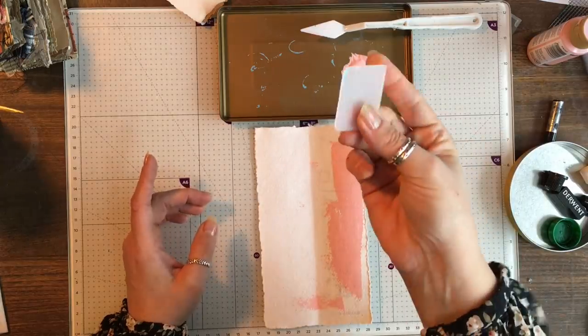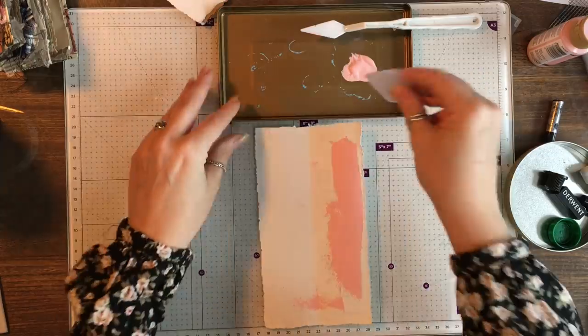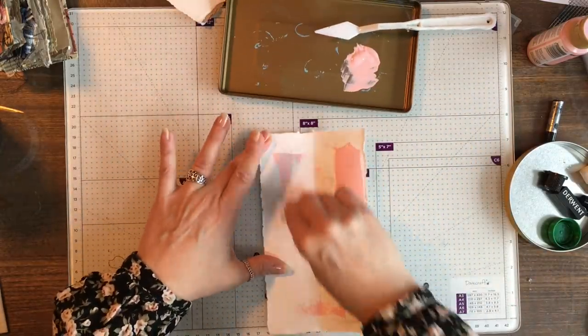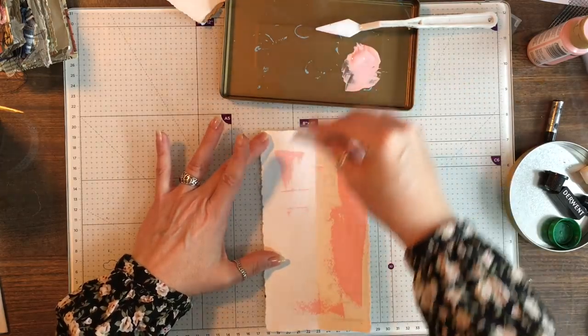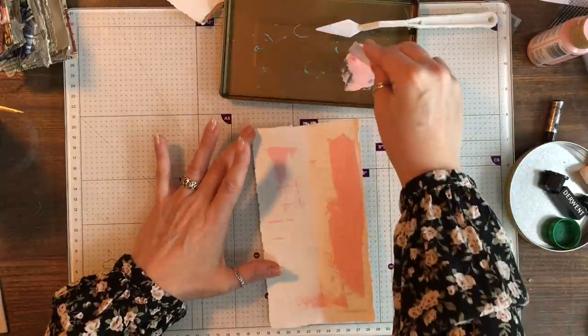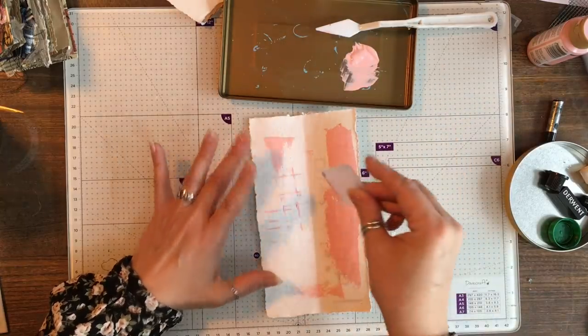If you don't have a palette knife, this is a divider from a craft supply box. You can do exactly the same without a palette knife, and you can also get some lines. So this is just about mark-making, nothing technical, nothing complicated, just getting texture onto a page.